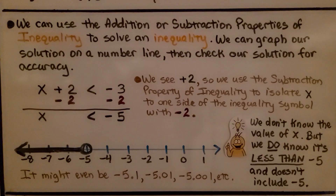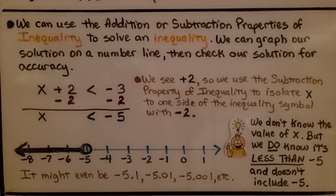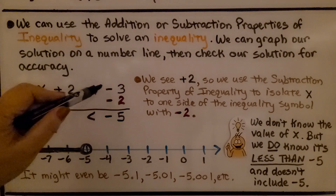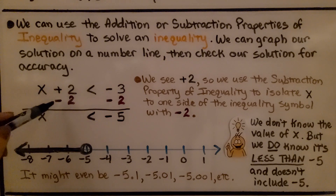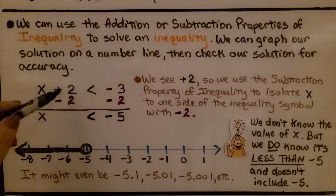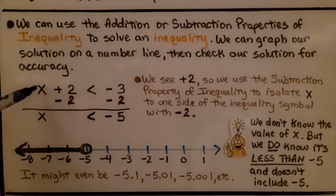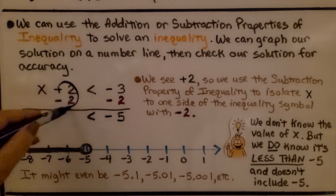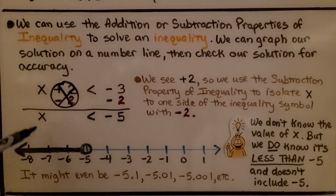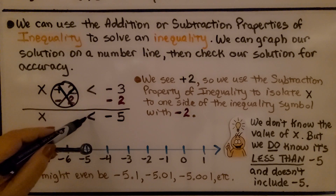We can use the addition or subtraction properties of inequality to solve an inequality, then graph our solution on a number line. If we have x plus 2 is less than negative 3, we see this plus 2, so we use the subtraction property — subtract 2 from each side to isolate x. That eliminates the plus 2, making a zero pair, and gives us negative 5 on the other side. So x is less than negative 5.